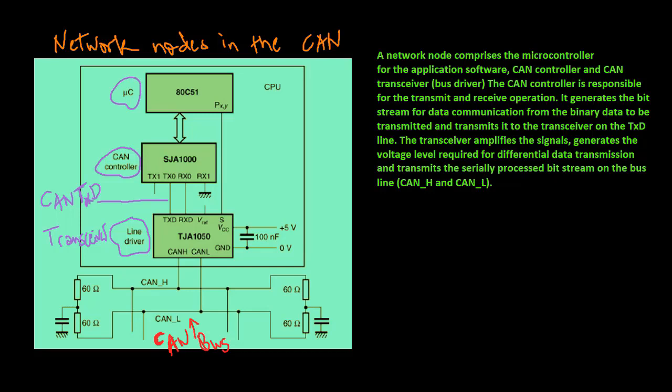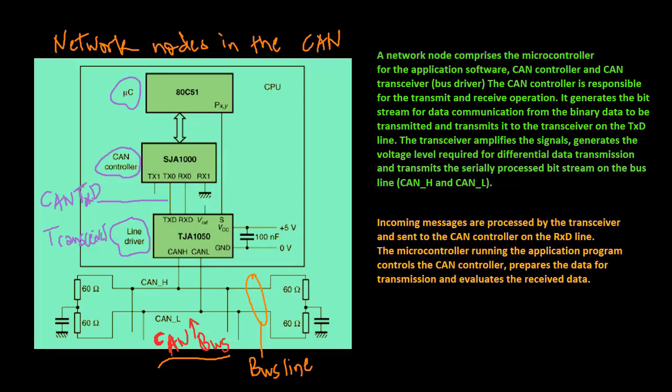The transceiver amplifies the signals, generates the voltage level required for differential data transmission, and transmits the serially processed bitstream on the bus line. Incoming messages are processed by the transceiver and sent to the CAN controller on the RXT line. The microcontroller running the application program controls the CAN controller, prepares the data for transmission and evaluates the received data.